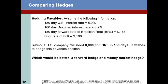The second type of problem involves a comparison of hedges — specifically the money market hedge and the forward hedge. The forward is by far the easier one, but let's look at this problem.